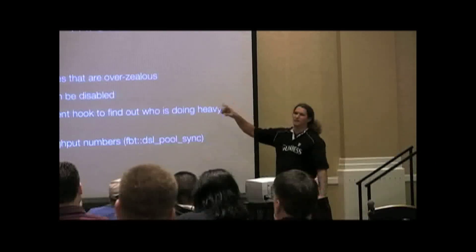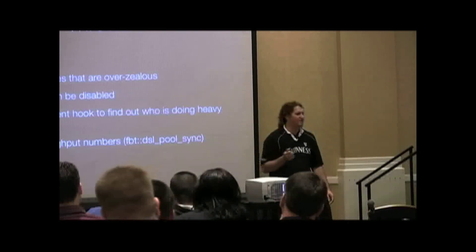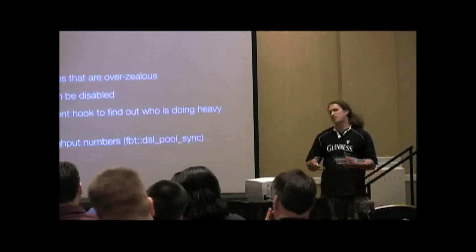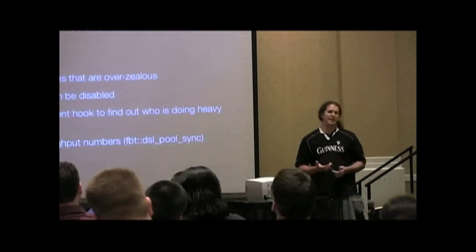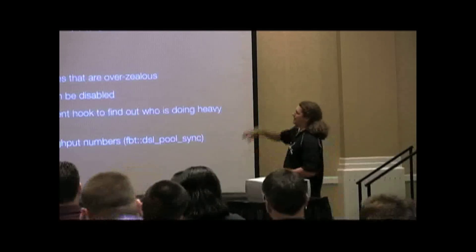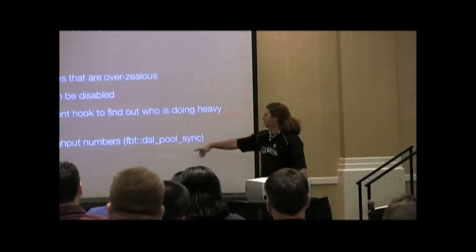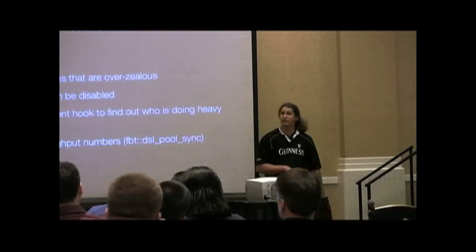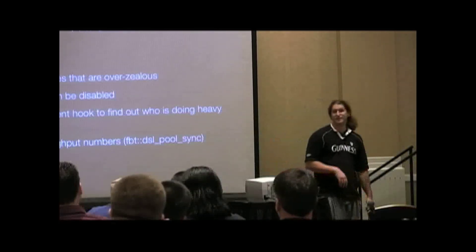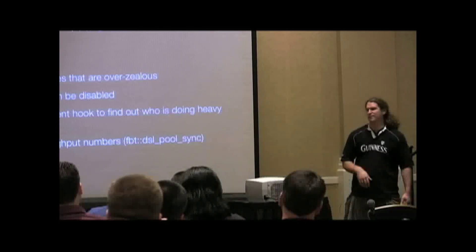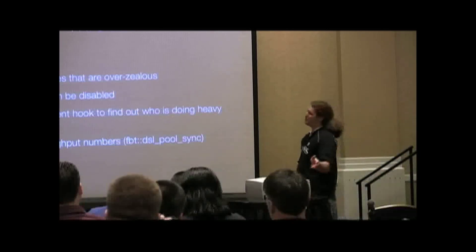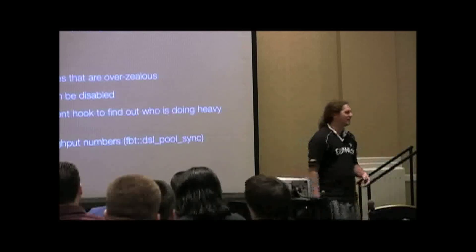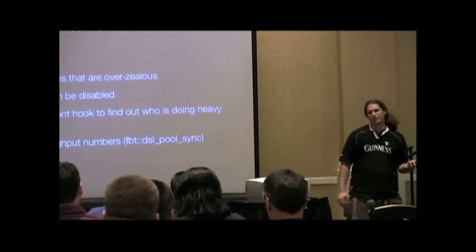If you do leave the throttle enabled, it provides one benefit, especially in a largely multi-user environment. If you want to figure out who's consuming too much I/O and you're not sure who it is, you can DTrace the write throttle — DSL pool sync — and figure out who's actually doing it. You can see who the hog is. In a lot of cases, when you do that, you're probably going to find that the hog is the one thing you want to run as fast as possible, and you may consider turning it off.